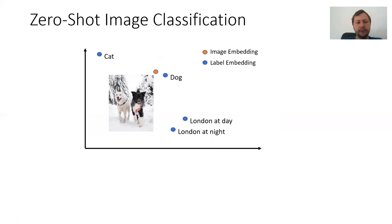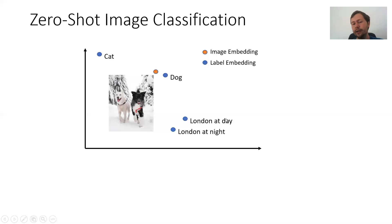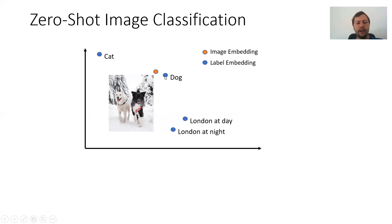OpenAI uses this approach for zero-shot image classification. You have a text embedding method and describe your labels as text — encoding 'cat', 'dog', 'London at night', 'London at day' in the vector space. To perform image classification, you encode the image in the vector space and see which label point is closest. In this case, if the text 'doc' is close in the vector space, you classify the image as a document image.